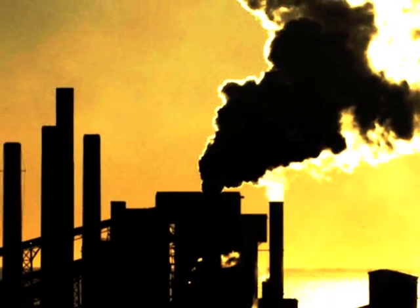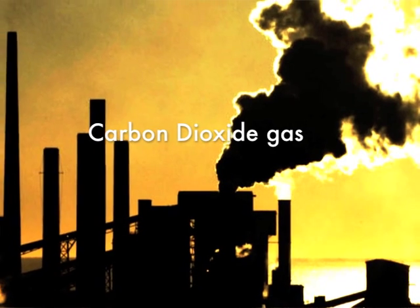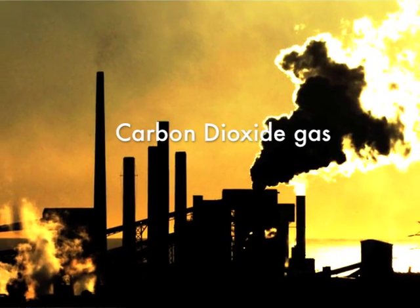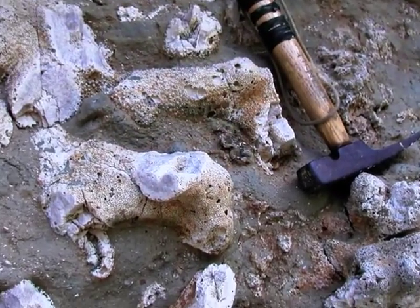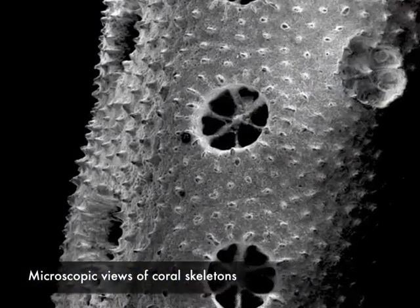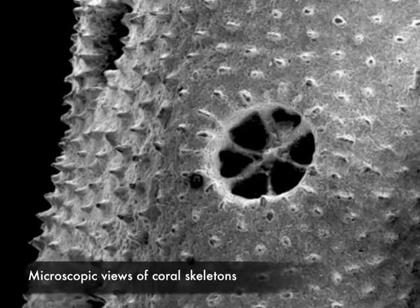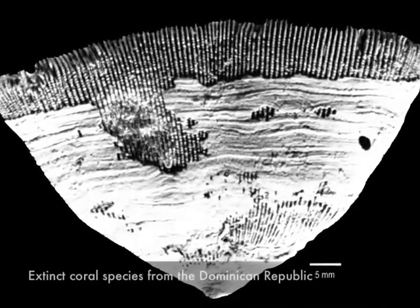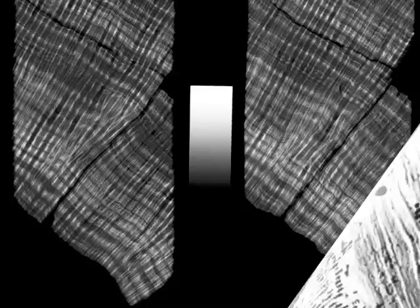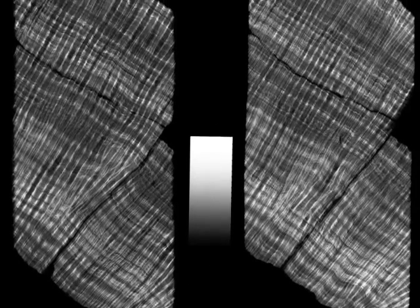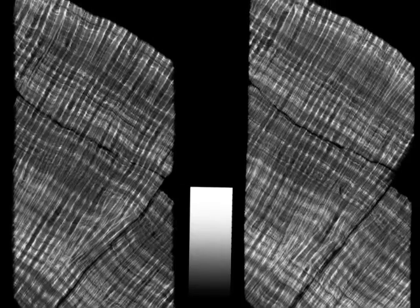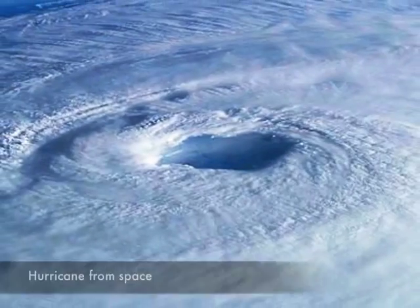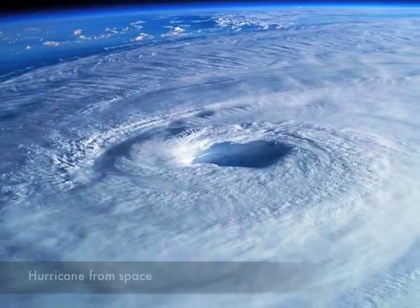Global warming appears to be occurring, in part due to human activity such as the excess production of carbon dioxide. Fossil reefs, especially those from the Dominican Republic, are showing us how past environmental changes caused the evolution of some species, but the extinction of others. By understanding ancient climate change before humans existed, we will better understand its likely impact on life on Earth in the future.